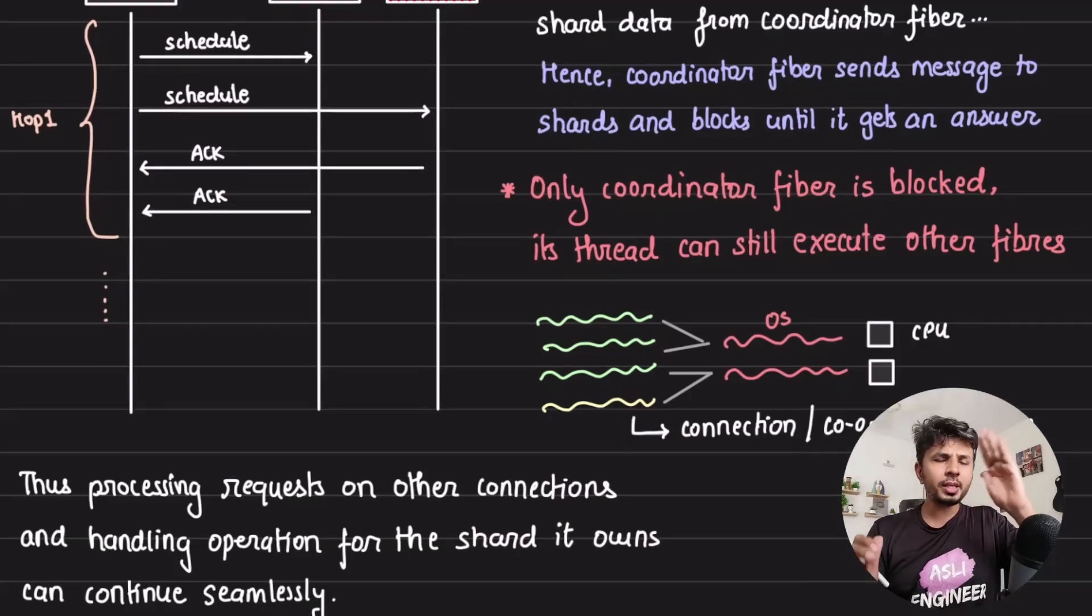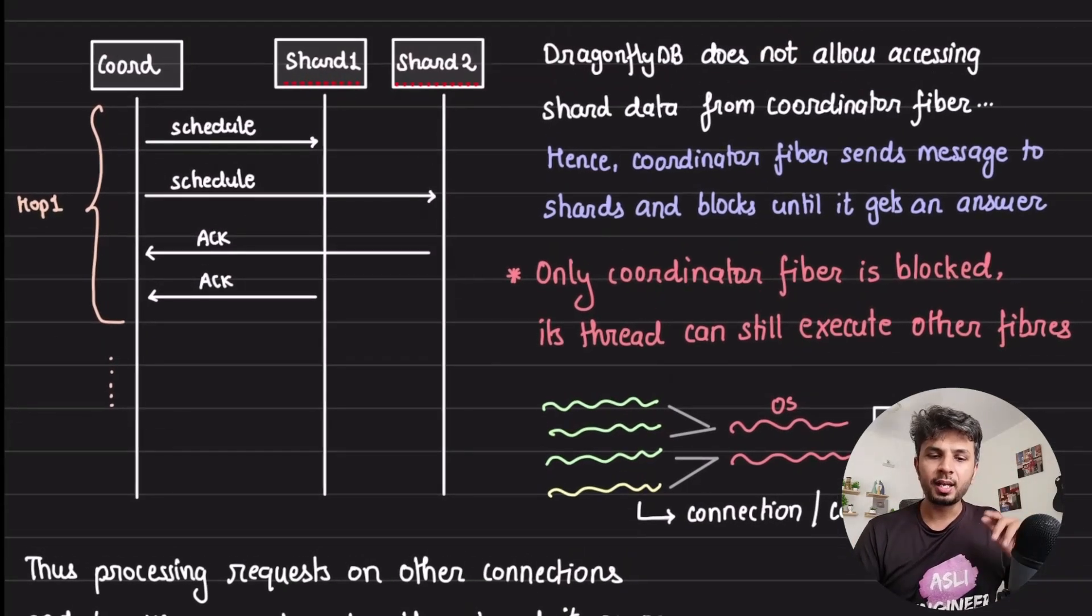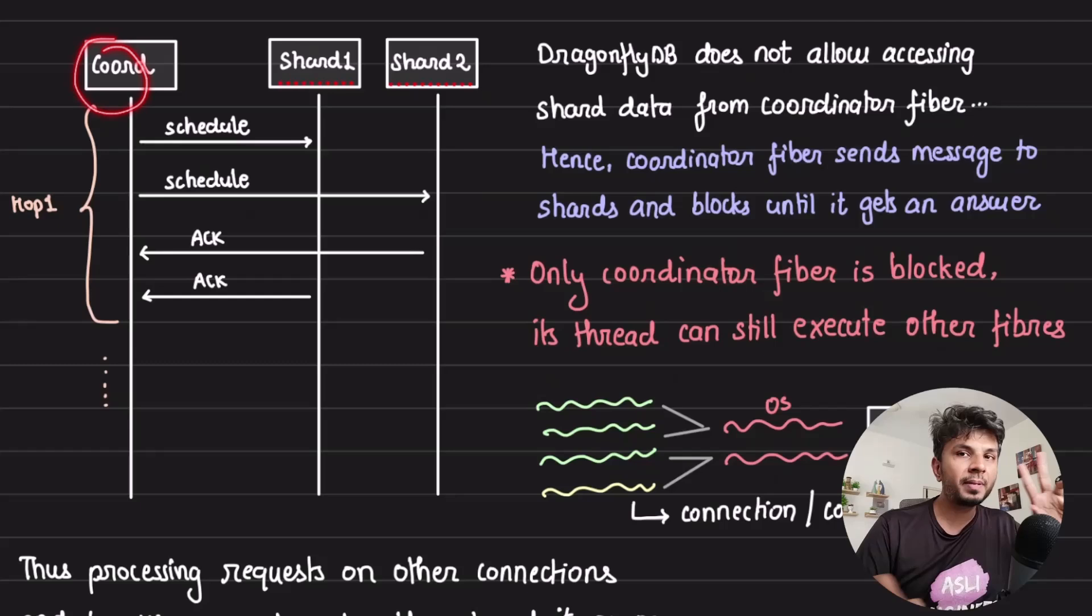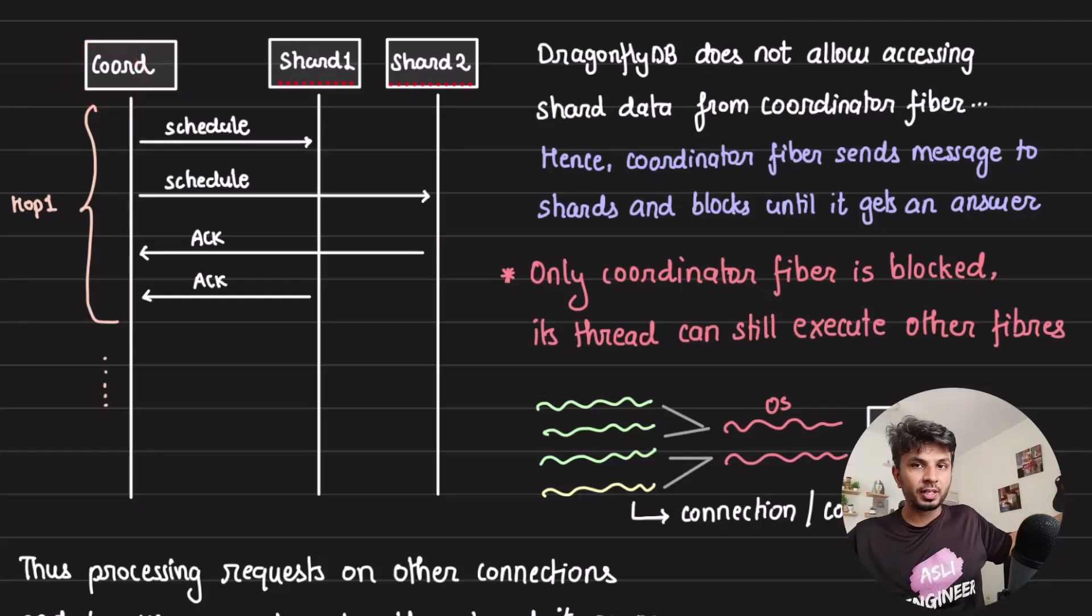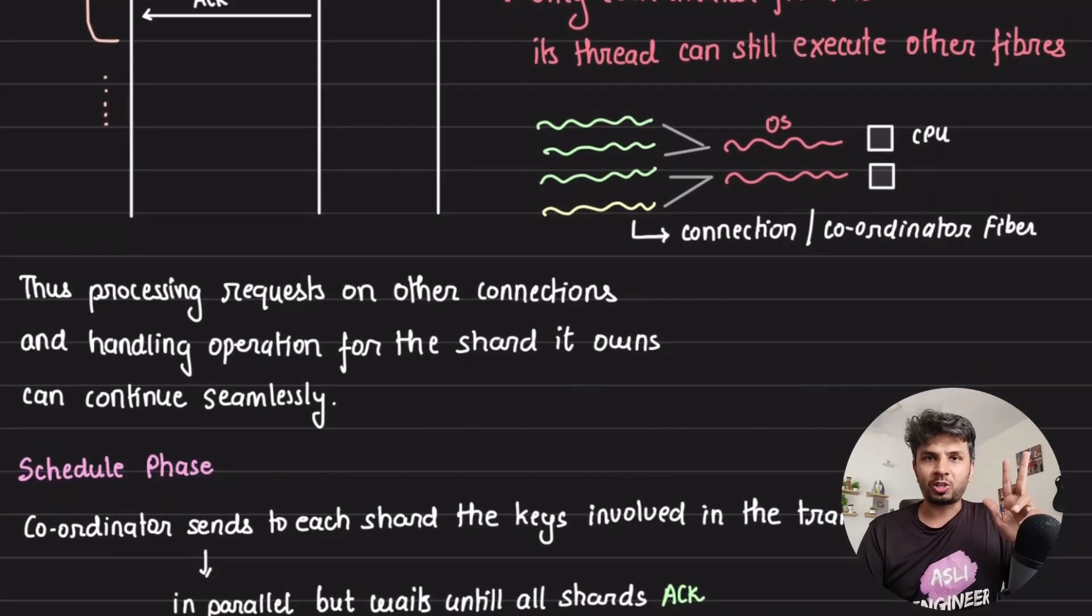One thing to note here is that while this is happening, only the coordinator fiber is blocked. Every other fiber is still working. Other fibers which are dealing with other IOs and other client connections, they're continuously working. They don't have to be blocked. Neither the shard threads need to be blocked. The only fiber that is blocked is the coordinator fiber on which the transaction has begun. That's why your throughput is never compromised.